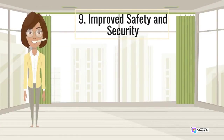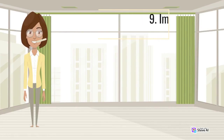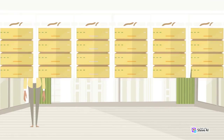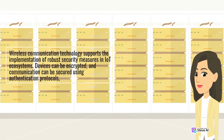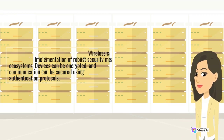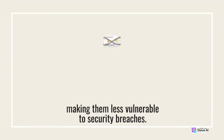9. Improved safety and security. Wireless communication technology supports the implementation of robust security measures in IoT ecosystems. Devices can be encrypted, and communication can be secured using authentication protocols, making them less vulnerable to security breaches.